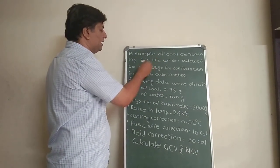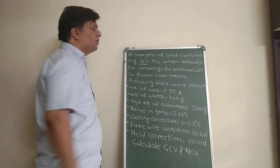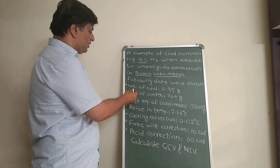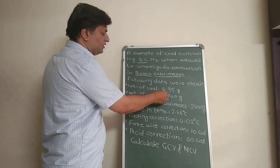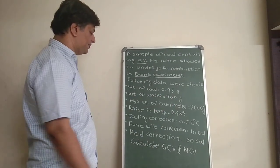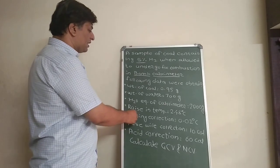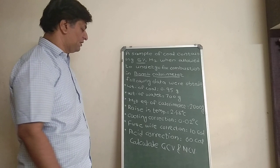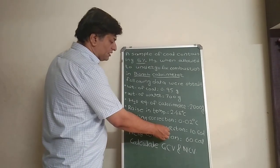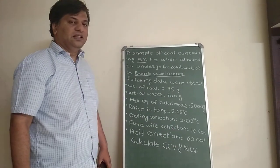A sample of coal containing 5% hydrogen, when allowed to undergo combustion in a bomb calorimeter, the following data were obtained: weight of coal 0.95 g, weight of water 700 g, water equivalent of calorimeter 2000 g, rising temperature 2.48 degrees Celsius, cooling correction 0.02 degrees Celsius, fuse wire correction 10 calories, acid correction 60 calories. Calculate GCV and NCV.